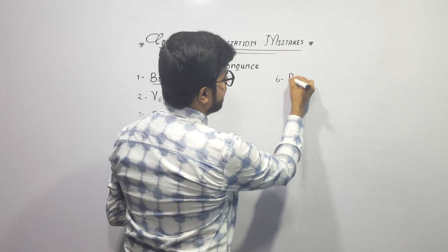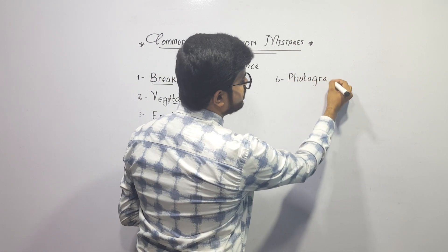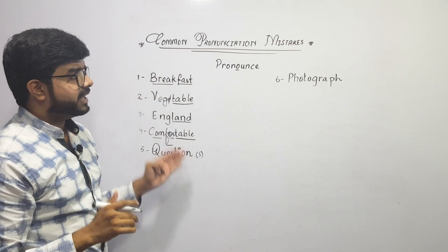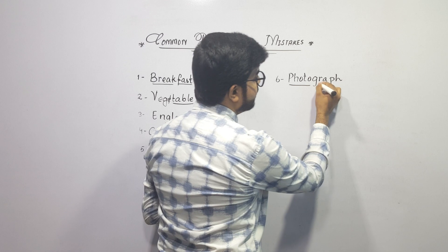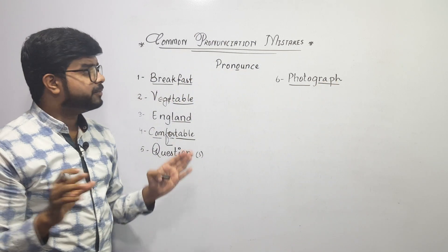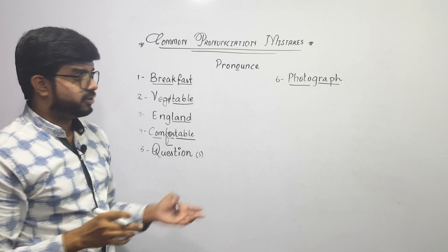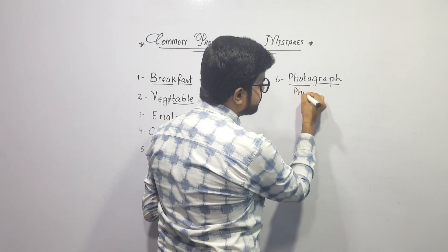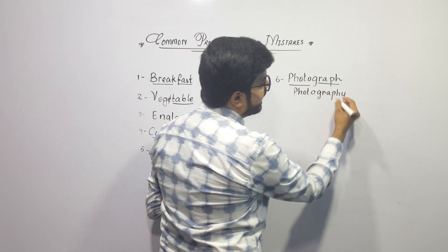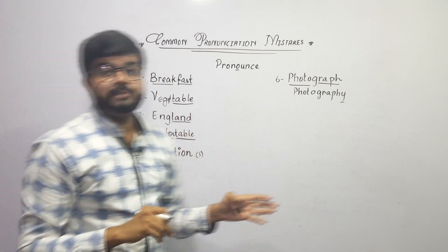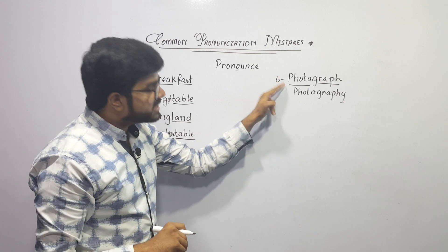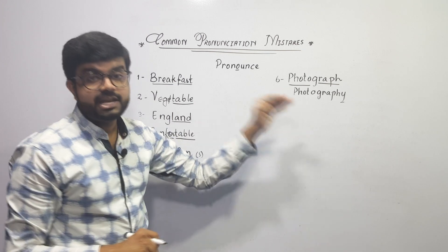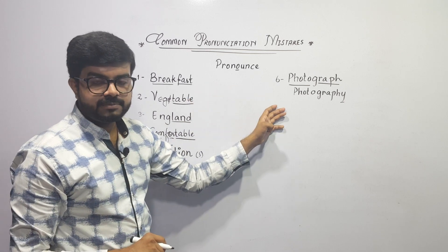The next word is very common today — nowadays people are really social and post their pictures everywhere. You can see two words here: photo and graph. So it is simply pronounced photograph. Now, if you add just a few letters at the end to make it photography, the whole pronunciation changes. It becomes photography, not 'photographee'. Photography.